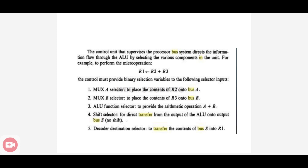The contents of R2 and R3 should be placed on buses A and B for performing the addition. To select R2, use the Mux A selector control signal to place the contents of R2 onto bus A. Mux B selector is enabled to place the contents of R3 onto bus B. The ALU then receives the data R2 and R3 from buses A and B respectively.